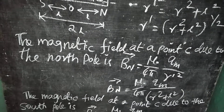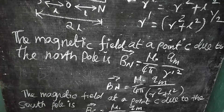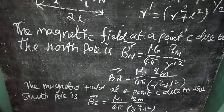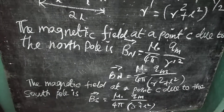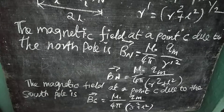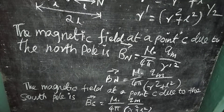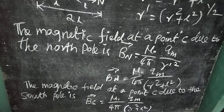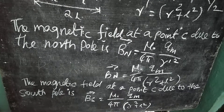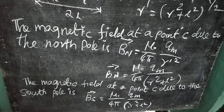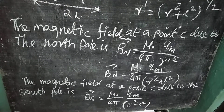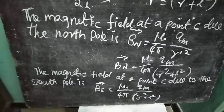Next, the magnetic field at point C due to the south pole is BS vector equal to mu-naught over 4 pi times qM over R prime squared, which gives BS vector equal to mu-naught over 4 pi times qM over R squared plus L squared.